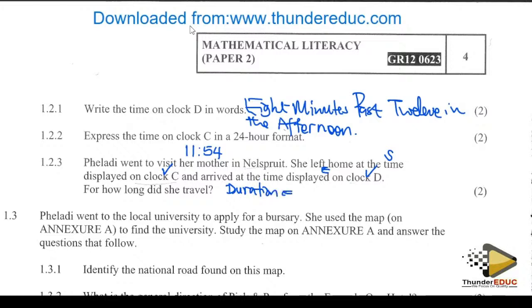Duration equals end time minus start time. The end time from clock D is 12 hours 8 minutes, minus the starting time from clock C which is 11:54. The answer is approximately 14 minutes.